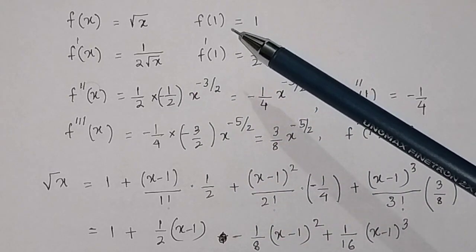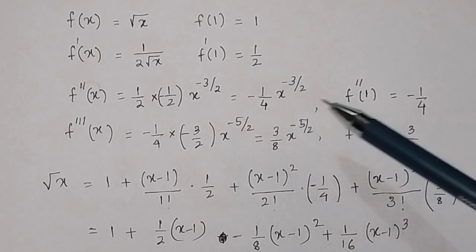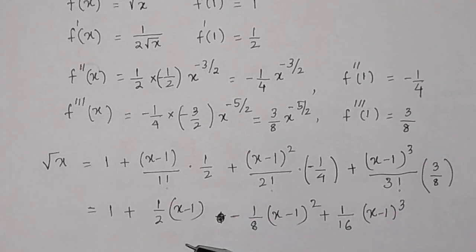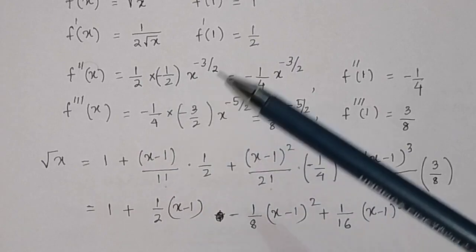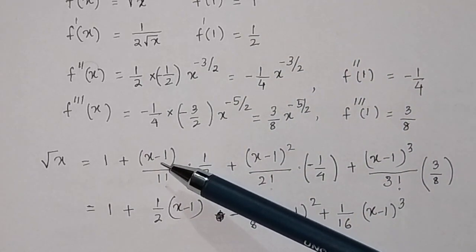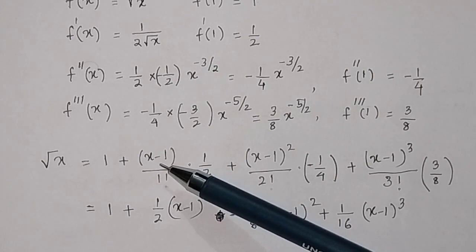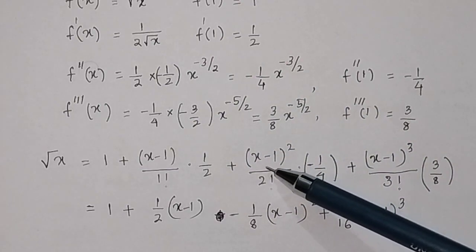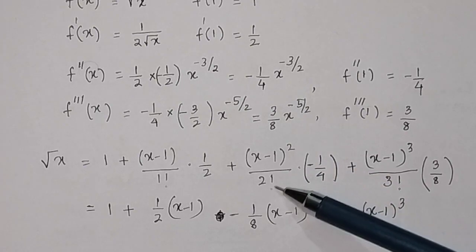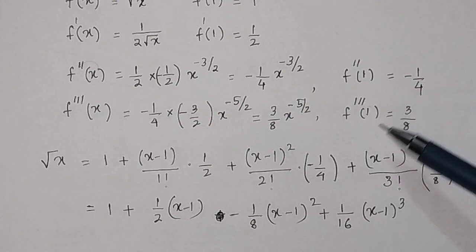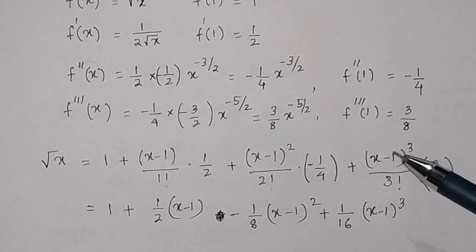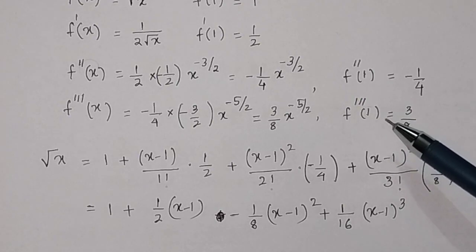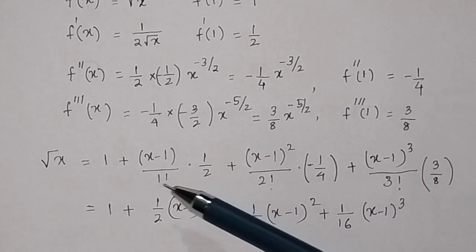Now substitute these values into the Taylor series expansion. √x equals: f(1) = 1, plus (x−1)/1! × f'(1) = (x−1) × (1/2), plus (x−1)²/2! × f''(1) = (x−1)²/2 × (−1/4), plus (x−1)³/3! × f'''(1) = (x−1)³/6 × (3/8).